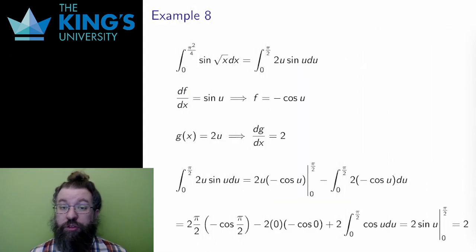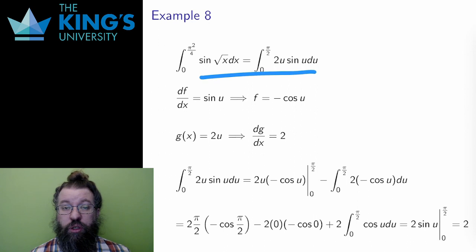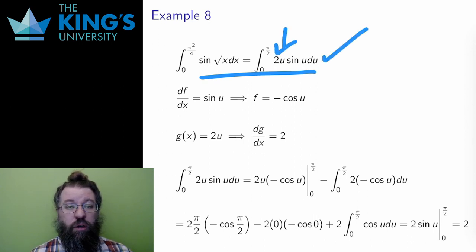All right, the substitution did get rid of the square root, but it introduced a u in front of the sine. Well, that's fine, since this is now a good setup for integration by parts.